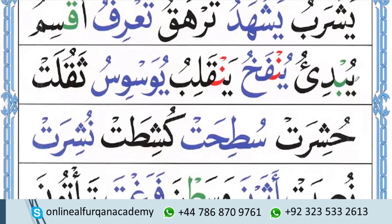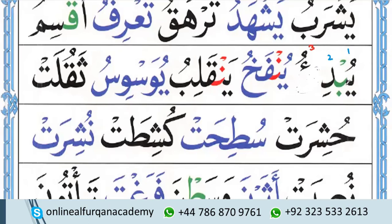Here the U sound is going to connect with BA — the first one becomes YUB. This is letter DAL — DI. Then we have letter YA with letter Hamza written on top. Whenever Hamza is written on top of YA, letter YA becomes silent, so we do not pronounce this YA. We only pronounce the U sound because letter Hamza has Damma. So it is U. Together: YUB, DI, U.